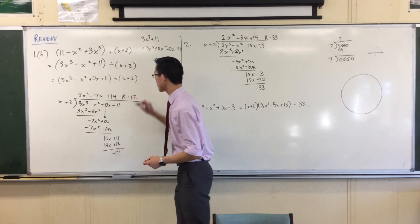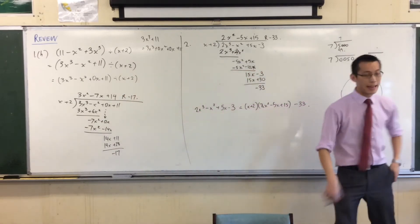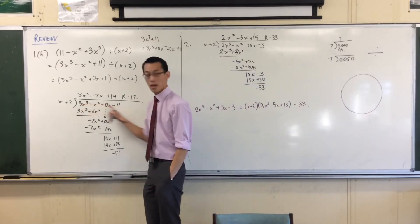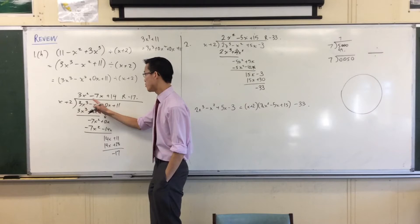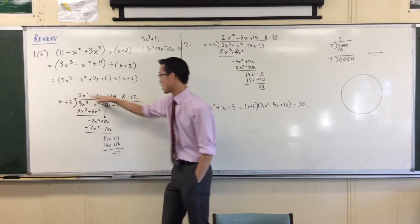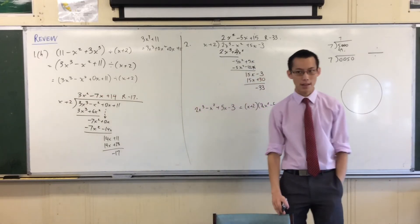So there is my answer. And again, just like I have here, I could rewrite this. I could say that big polynomial I started with at the front, 3x cubed minus x squared plus 11. It's equal to x plus 2 times that, take away 17. And I'm finished.